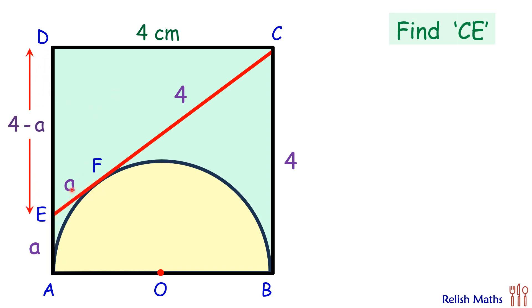Now if you look at this triangle CDE, it's a right angle triangle. So applying Pythagoras theorem, we will get CD squared plus DE squared is CE squared. Putting the values: CD is 4, DE is 4 minus a, and CE is 4 plus a.